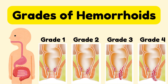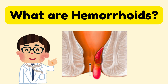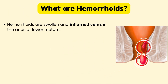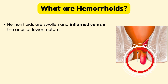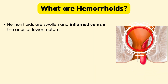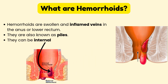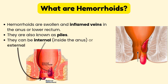Grades of Hemorrhoids. What are hemorrhoids? Hemorrhoids are swollen and inflamed veins in the anus or lower rectum. They are also known as piles. They can be either internal hemorrhoids — hemorrhoids inside the anus — or external hemorrhoids, which are hemorrhoids under the skin around the anus.